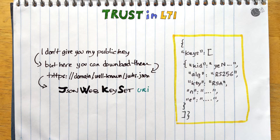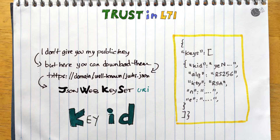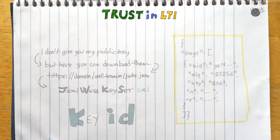The key set contains at least one public key and may contain more. Alongside the key set URL, it becomes necessary to identify which key was used to sign a message — this is done via a key ID. When a recipient receives a message with an unknown key ID, it indicates the cached key set is outdated and must be refreshed. The recipient can then query the issuer for a refreshed key set and look up the new public key, allowing key rotation at any time.